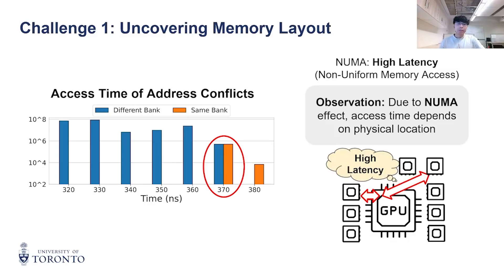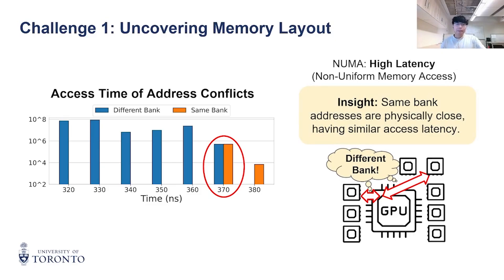This is due to the non-uniform memory access (NUMA) effect, where although no conflict happened, one address can still have a longer latency due to its physical distance from the GPU. Fortunately, we have a way to filter them. Addresses in the same bank are in the same DRAM chip and must be physically close.